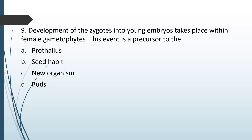Development of zygote into young embryos takes place within the female gametophyte. This event is a precursor to: the prothallus; seed habit; new organism; or buds. The correct answer is that this event is a precursor to seed habit.